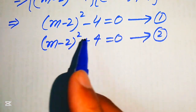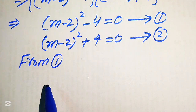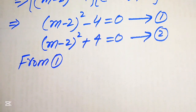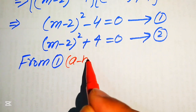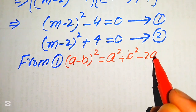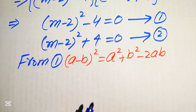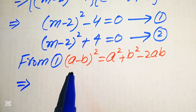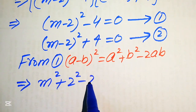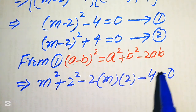We now focus on Equation 1. We expand (m minus 2) squared using the formula (a minus b) squared equals a squared plus b squared minus 2ab. Applying this, it becomes m squared plus 4 minus 4m, minus 4 equals 0.